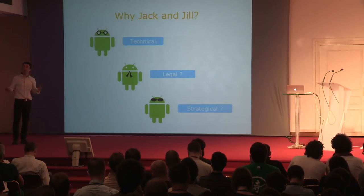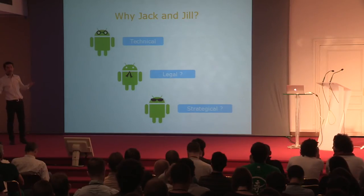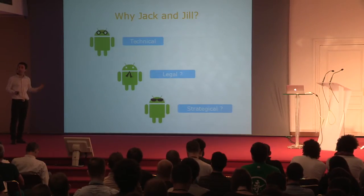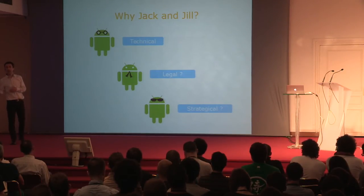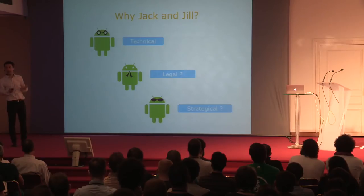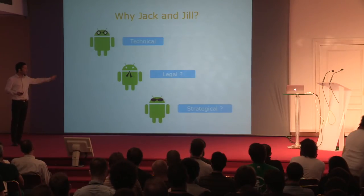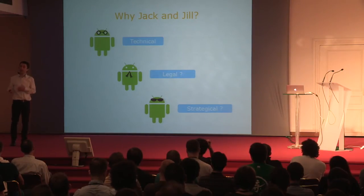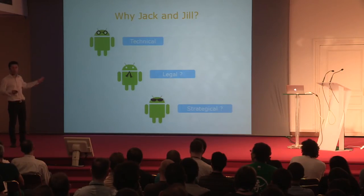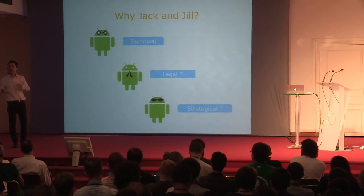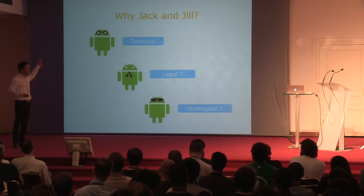You might wonder why we need Jack and Jill. That's up to Google to decide, but there might be technical reasons—and there are good technical reasons. There might be some legal reasons: most of the Android tools are under an Apache license, while some external tools like ProGuard have a GPL license. There might also be strategic reasons—as you may know, Google and Oracle aren't always the best of friends. But this is in the realm of conspiracy theories, so I'll leave that up to your imagination and stick to the technical side.